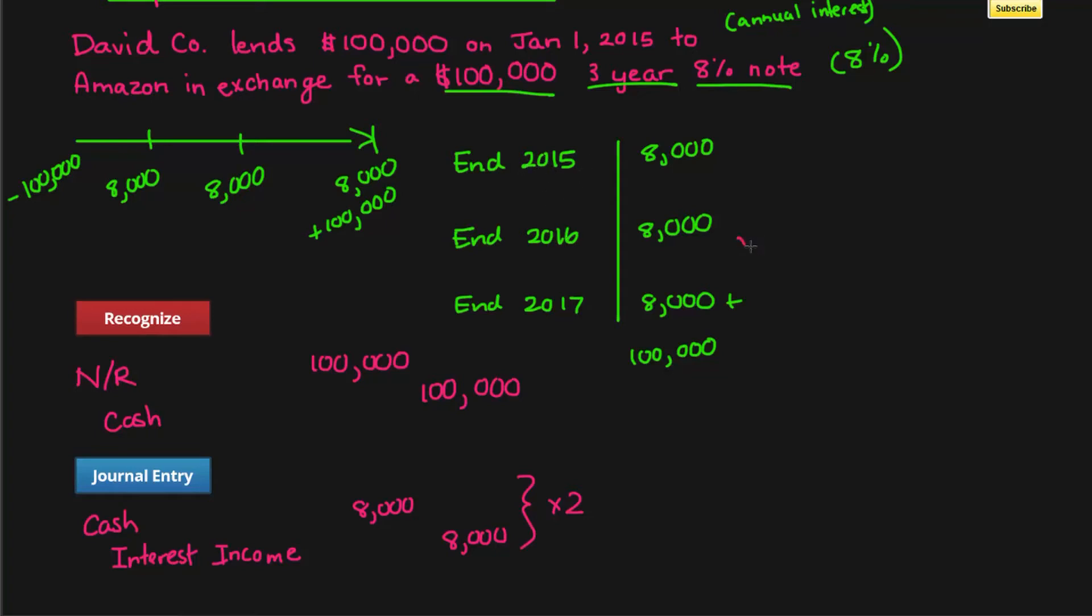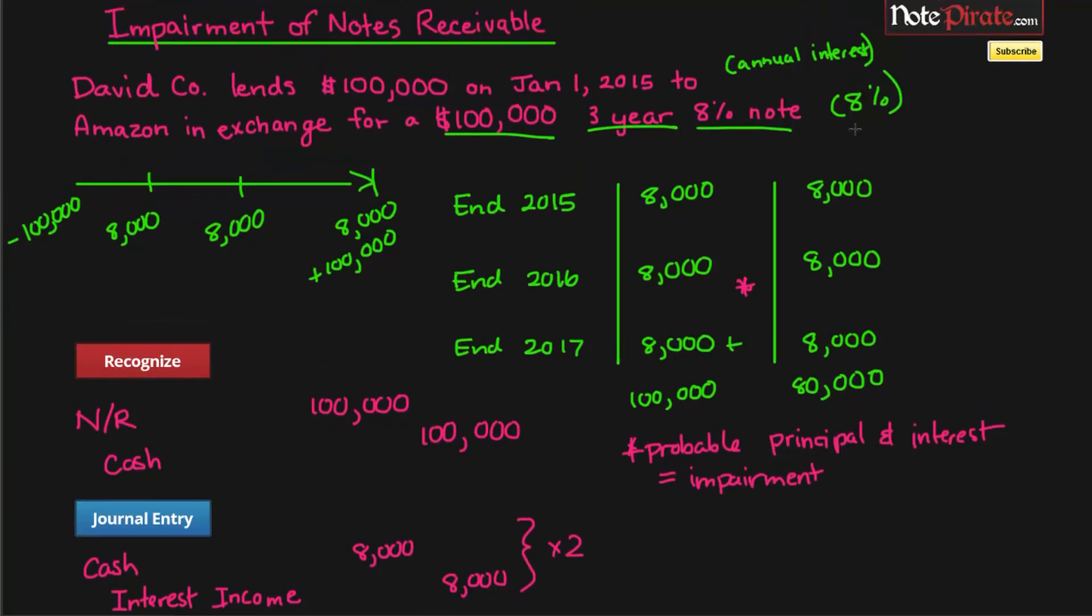Now we're at the end of 2016, and let's say that it is probable that we are not going to receive the entire principal back. We know we've received $8,000 for both years and we'll also receive the interest in the third year, but the amount of principal that will be returned to us is only $80,000 because they're insolvent and they can't pay their debts. Whenever it is probable that they're not going to be able to pay back the principal and interest, we have to make an impairment charge on our books. This is what is expected at the moment versus what was on our contract.